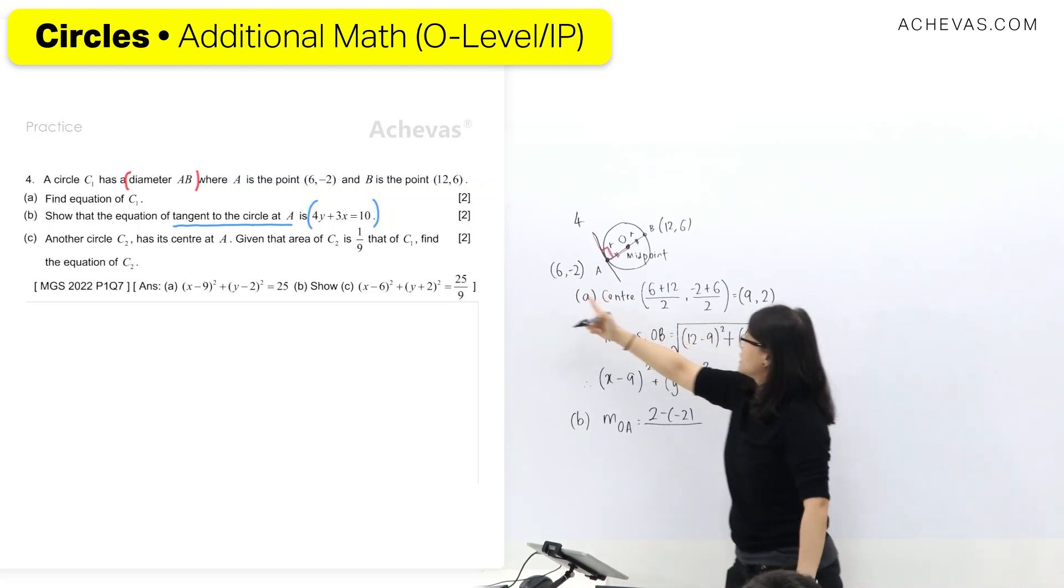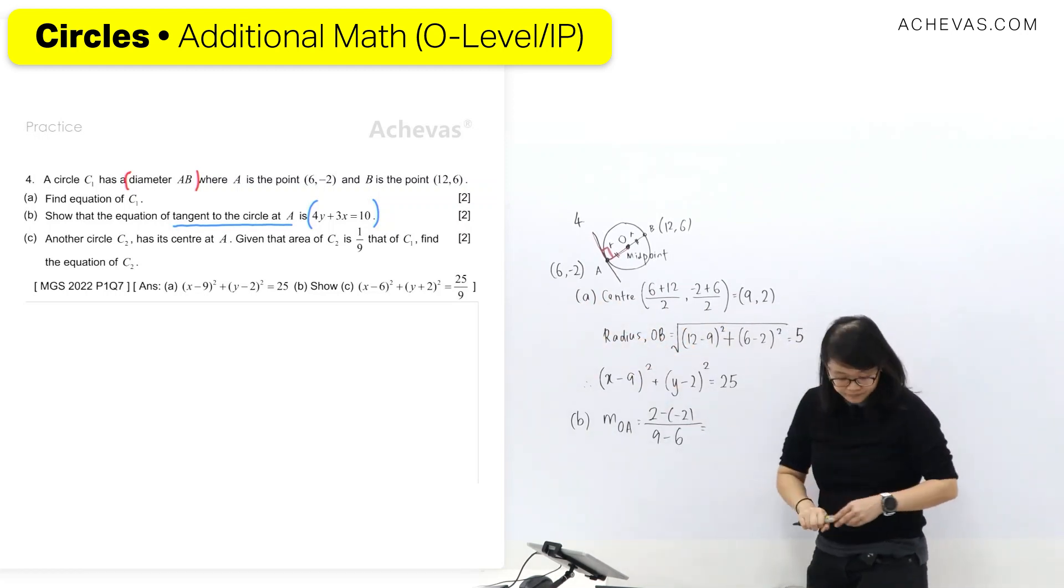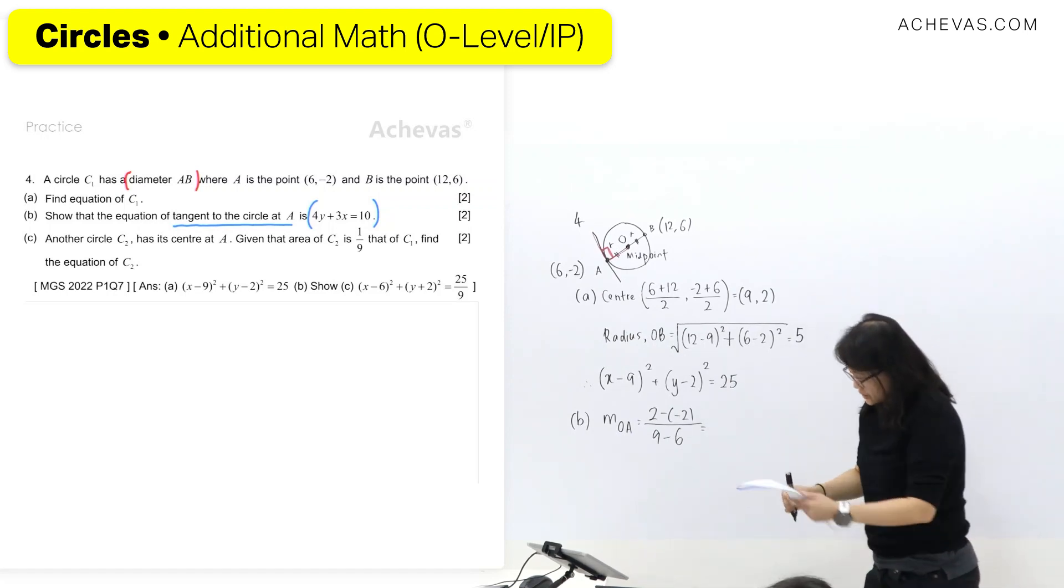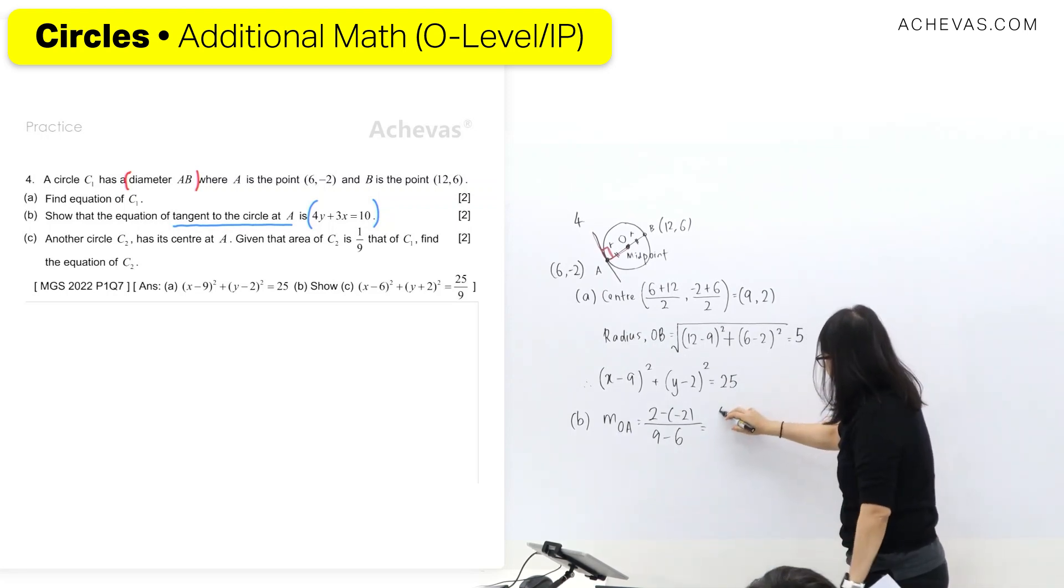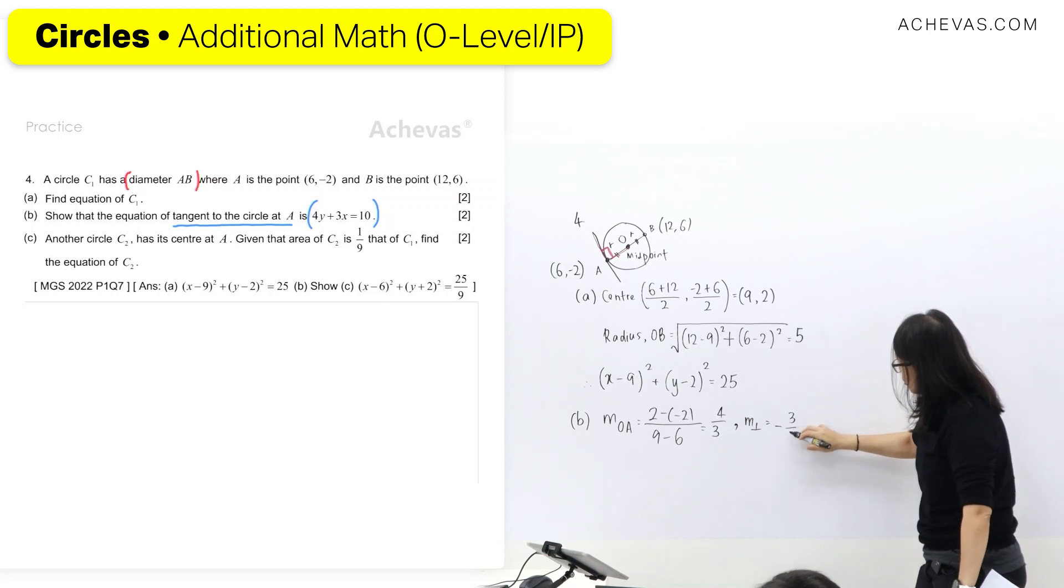What's O is 9, 2. Y coordinate first, y minus y, so this one minus this one, then x minus x, 9 minus 6. I have four over three. That's correct.